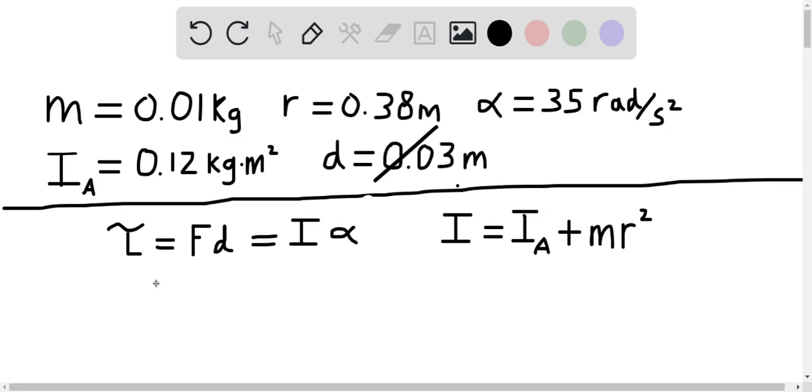The torque being placed equals the force times the distance from the force, d, which is 0.03 meters. F is what we're trying to find, and this is also equal to the moment of inertia times the angular acceleration alpha.